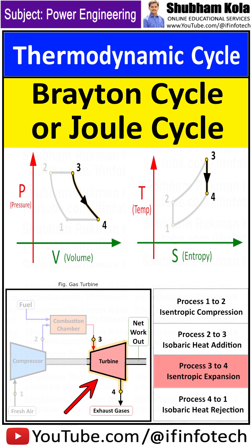Process 3 to 4 is the isentropic expansion process, where the compressed and heated gas expands adiabatically from state 3 to state 4 in the turbine blades.